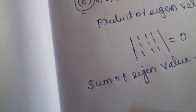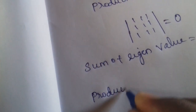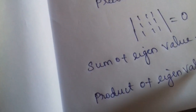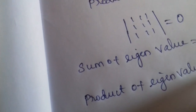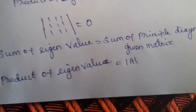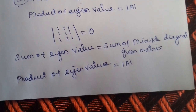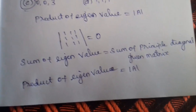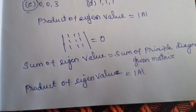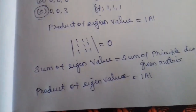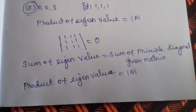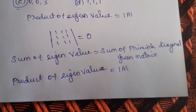And the second property: product of eigenvalues is equal to the determinant of A. Using these two properties — sum of eigenvalues equals sum of the principal diagonal, and product of eigenvalues equals determinant of A — we can easily find the eigenvalues of any given matrix.